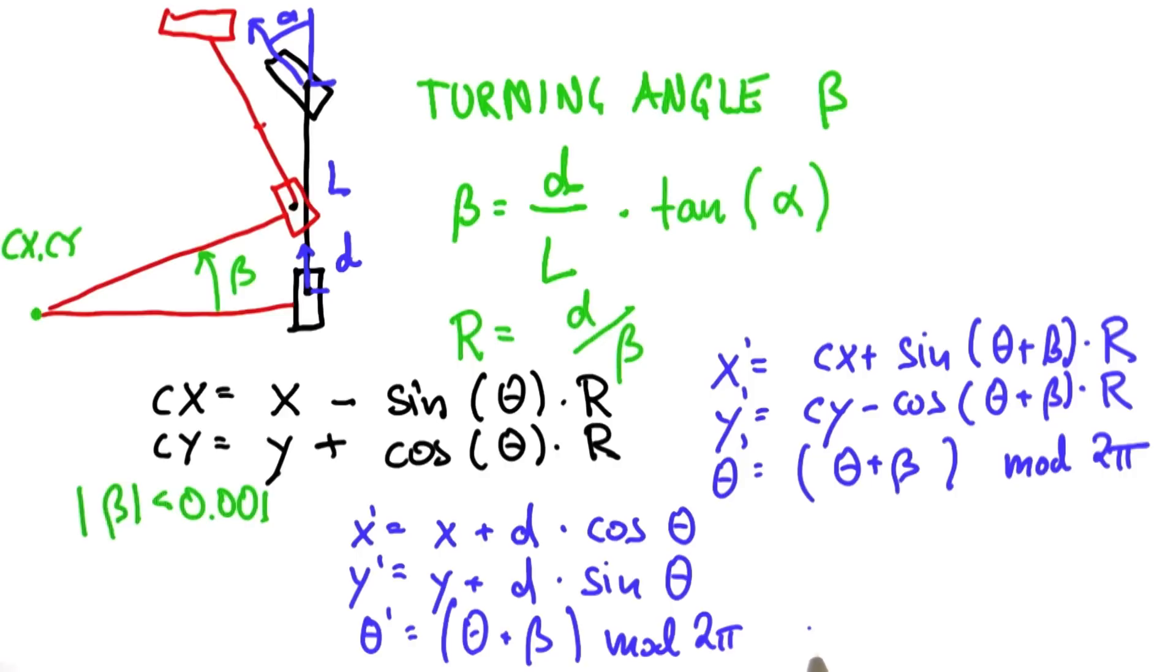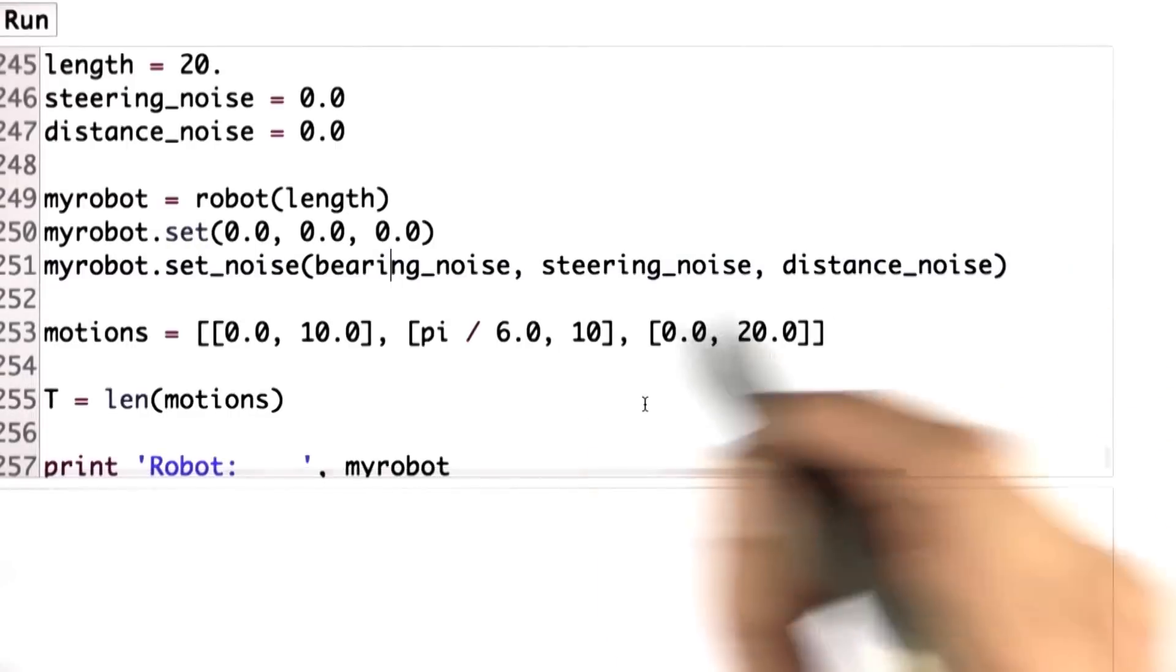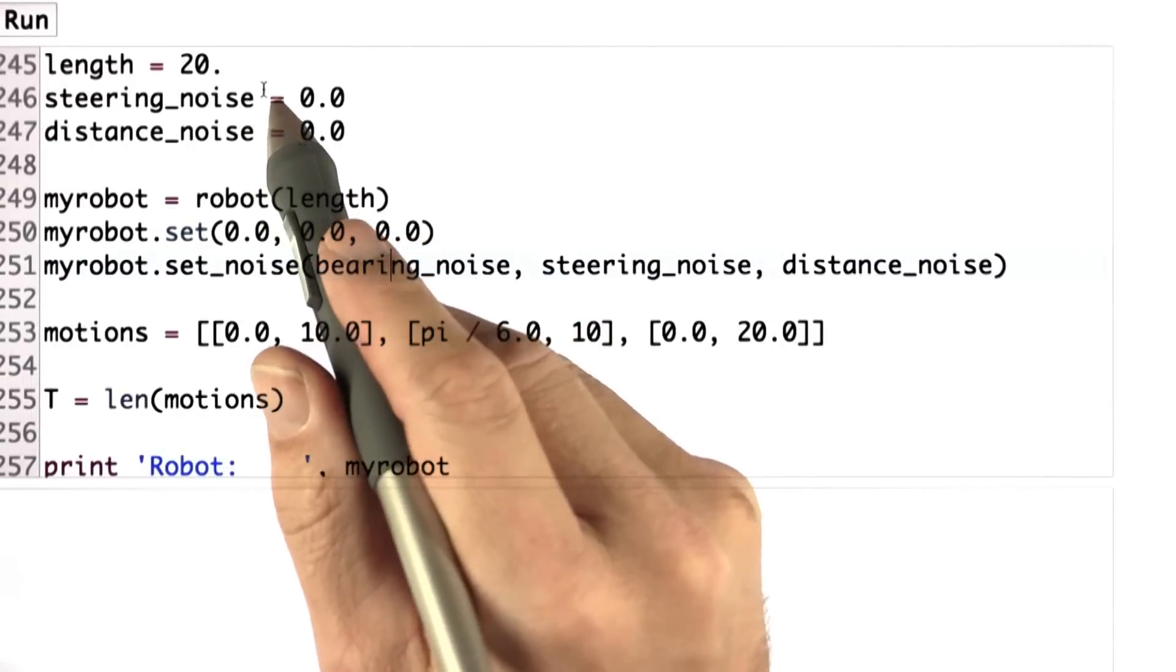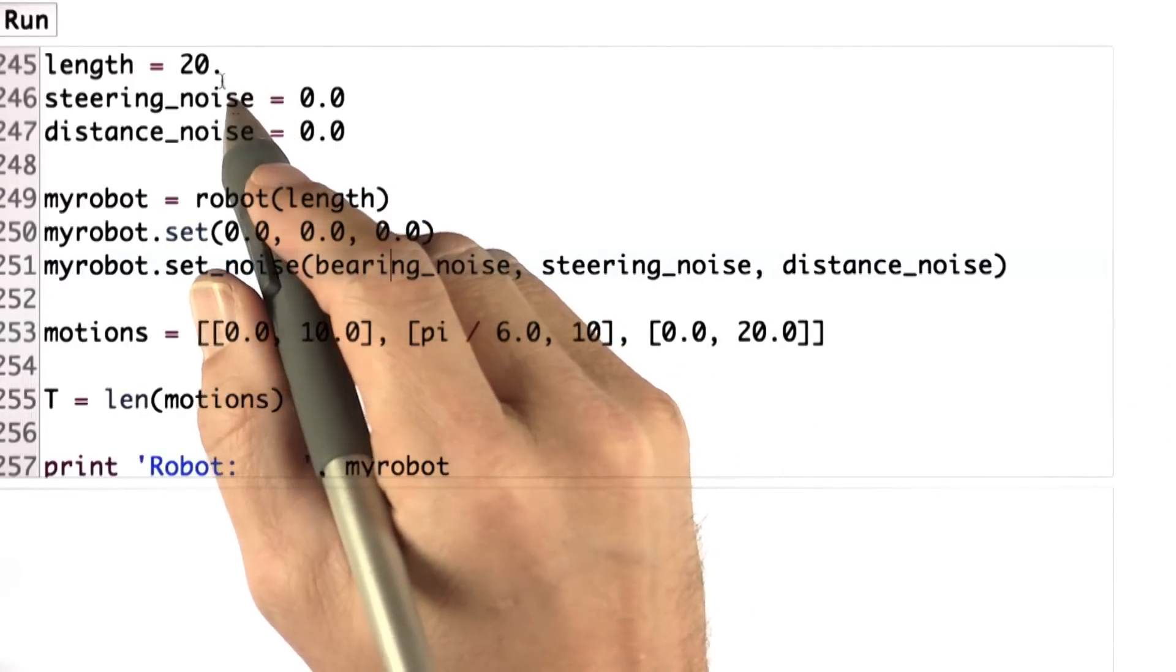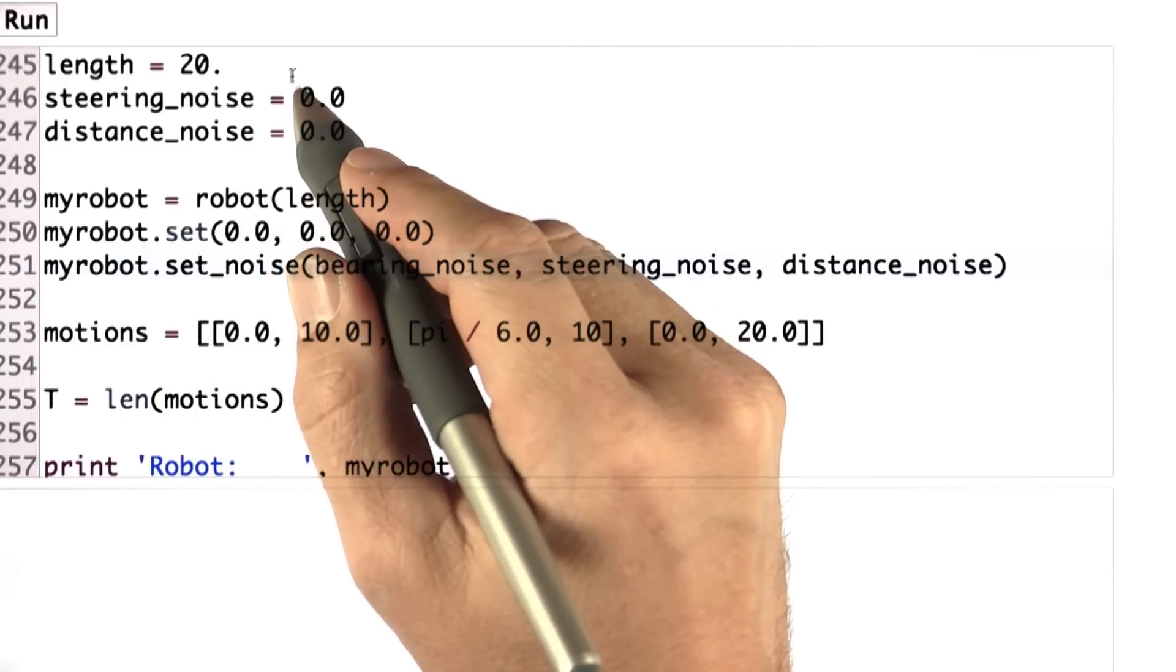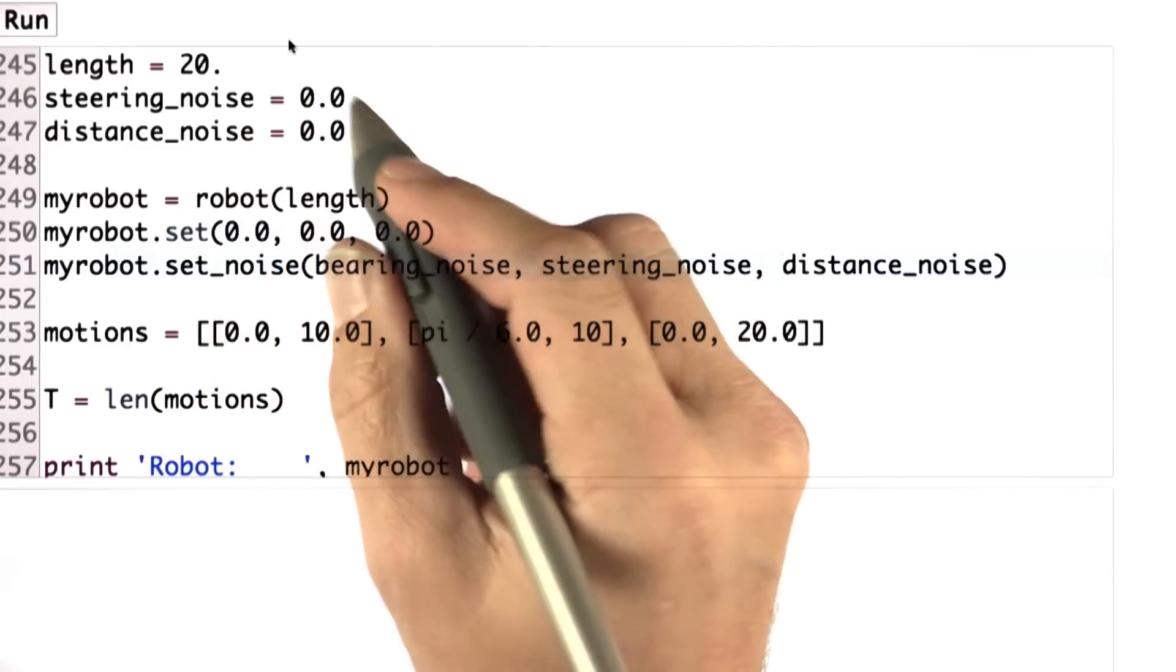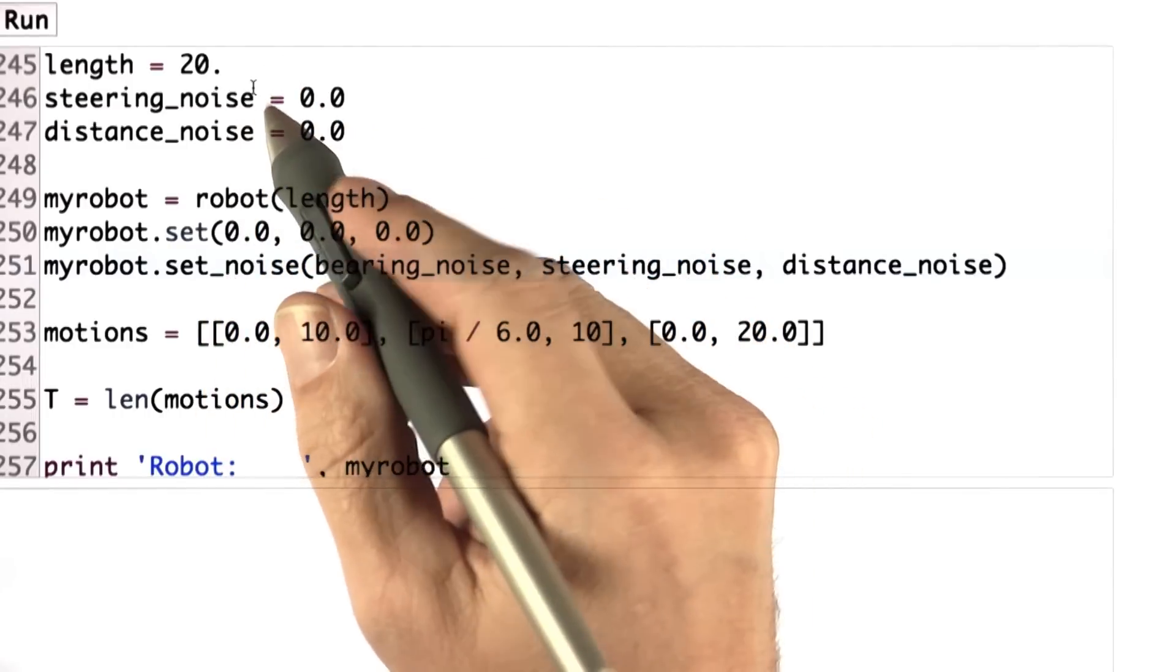So in this programming assignment, I'd like you to implement this piece of math over here in our particle filter. And to make sure you implemented it correctly, I will give you some example data that you can check. So in our first part, I prepared a lot of software for you, basically copying the old particle filter software over and removing the motion and the measurement model for now.